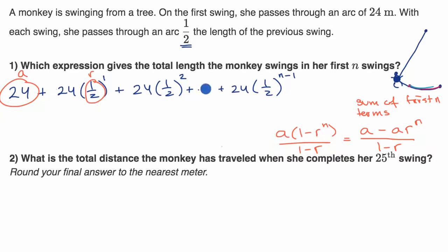So this is going to be equal to, actually I'll use this second form right over here. So our first term a is 24, so we're going to have 24, times one minus our common ratio, which is 1/2, to the nth power. 24, well we're talking about the first n swings, so I'm just going to leave an n right over there. All of that over one minus our common ratio. One minus 1/2.